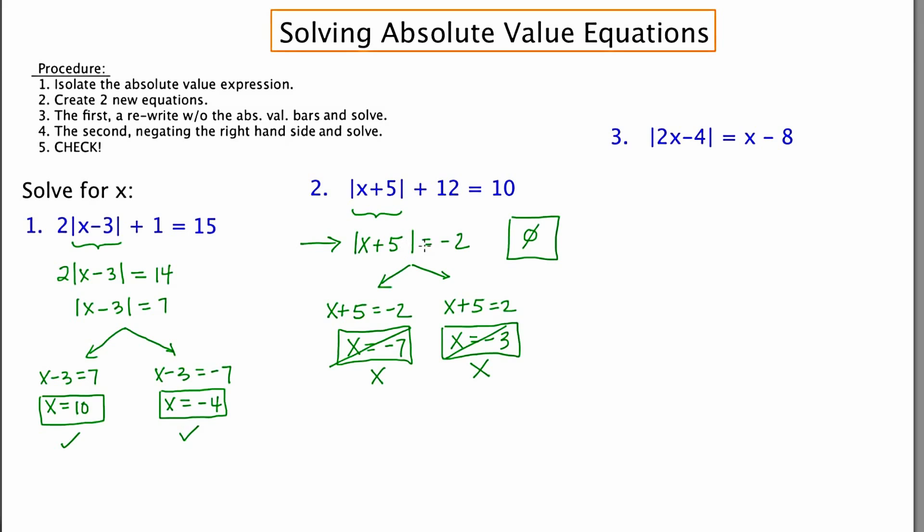Now for the last example. In the last example, the absolute value expression is already isolated, so I'm just ready to write the two new equations. 2x - 4 is equal to x - 8. 2x - 4 is equal to -x + 8. Be careful when you're negating a multi-termed expression that you negate each of them. You're applying a negative to each term in that expression.